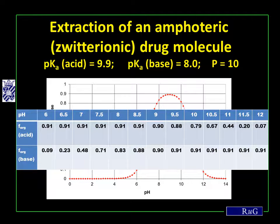This can be expressed in numbers for the acid and the base separately. The acid is well extracted at low pH values, even up to pH 8, and then the extraction yield goes down because the acid is not very strong — it has a pKa of 9.9. For the base, it's the other way around: poor extraction at low pH, increasing at high pH. And in the middle, you have the optimal pH of pH 9.